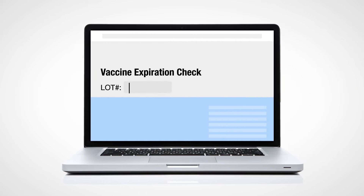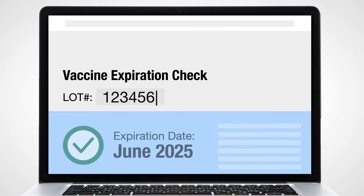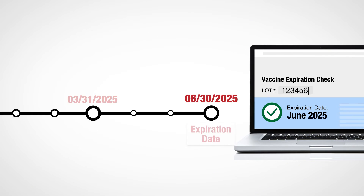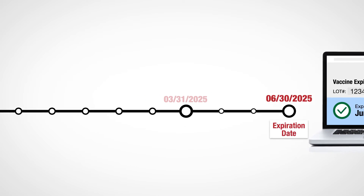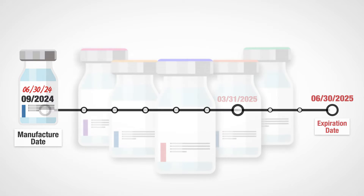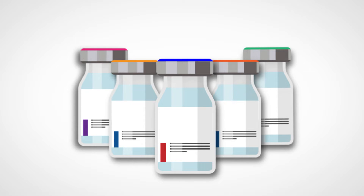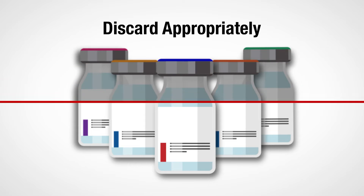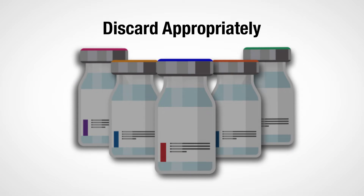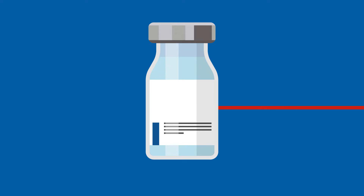Occasionally, an expiration date may change, such as when the FDA announces an extension, lengthening the expiration date. Inappropriate vaccine handling and storage conditions can shorten the expiration date or even require vaccines to no longer be used. Follow your facility's standard operating procedures or contact the manufacturer for guidance, as the manufacturer could determine that a vaccine's expiration date should be moved up or that the vaccine cannot be used.